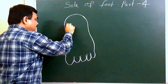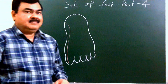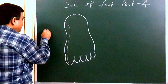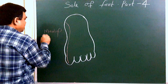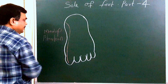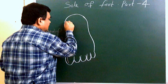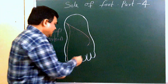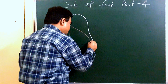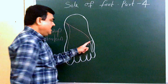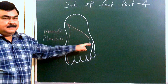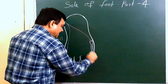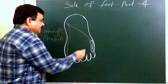Here is the medial plantar arch, which is a branch of the posterior tibial artery. This is the medial plantar artery, and here is the lateral plantar artery. The lateral plantar artery reaches the level of the base of the fifth metatarsal, where it divides into superficial and deep branches. The superficial branch runs laterally and supplies the lateral part of the sole.